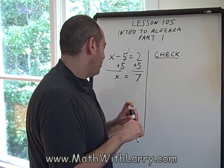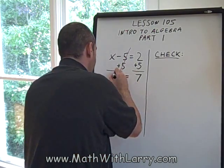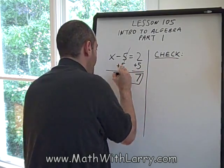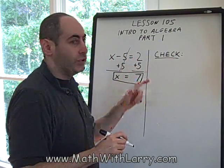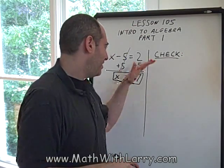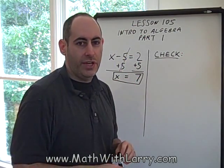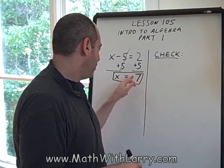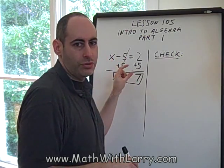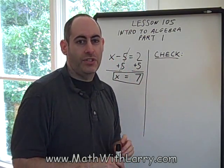It's important to understand that it's not just that we got an answer. We figured out the value of x which makes the original equation true — not just some magical steps producing a magical number, but the value of x that makes the left side equal the right side.